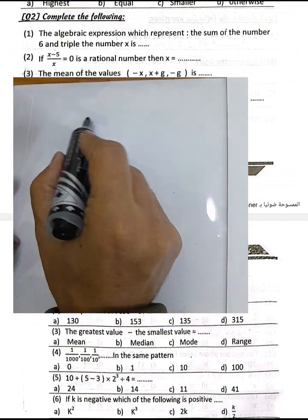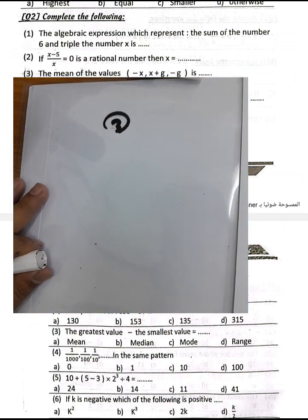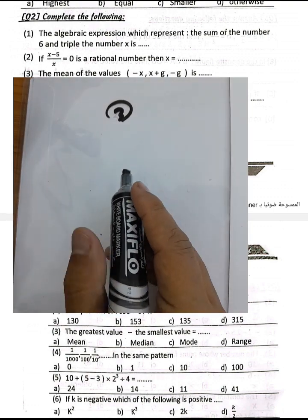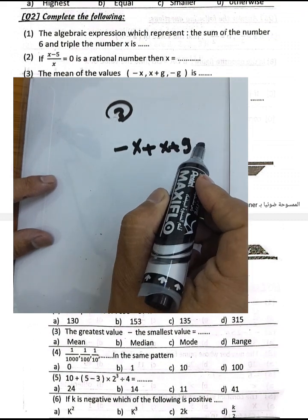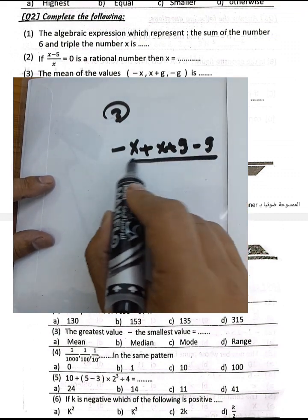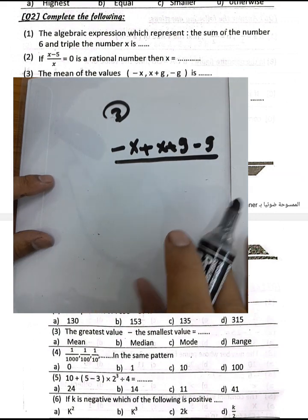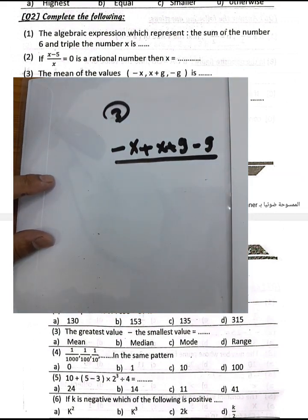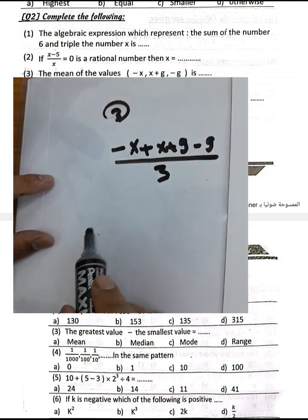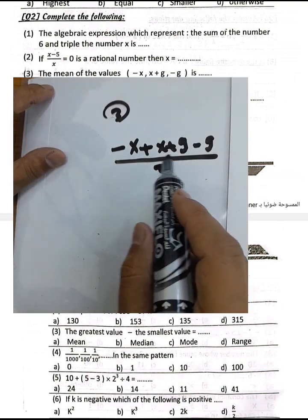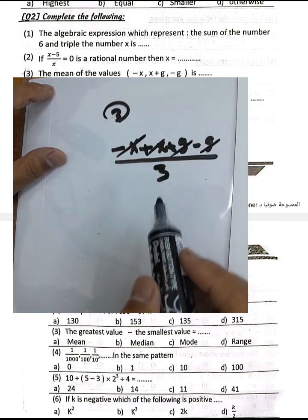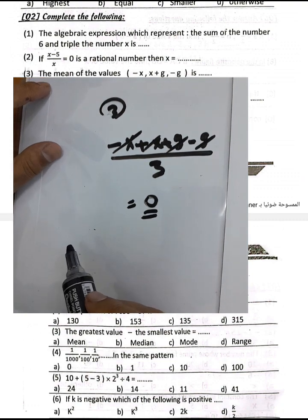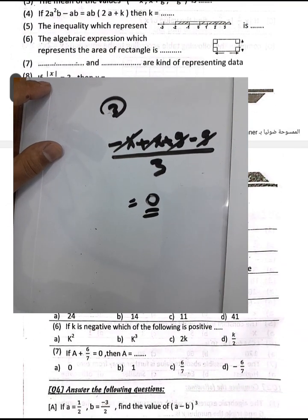Question number 3: Finding the mean of the values negative x, x plus g, and negative g. We find the mean by adding all values and dividing by the count of 3. Negative x plus x equals zero, and g plus negative g equals zero. So zero divided by 3 equals zero — the mean is zero.